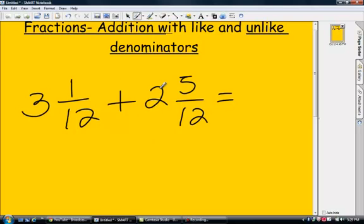Common denominators, we're adding. Just go straight across with all your numbers. Add your whole numbers: 3 plus 2 is 5, 1 plus 5 is 6. Bring over your 12.